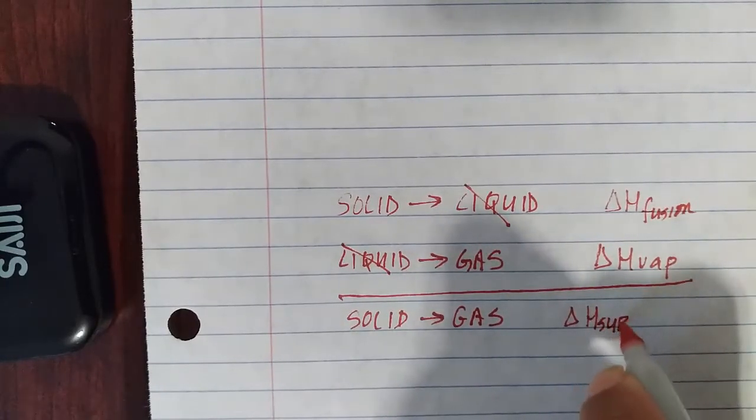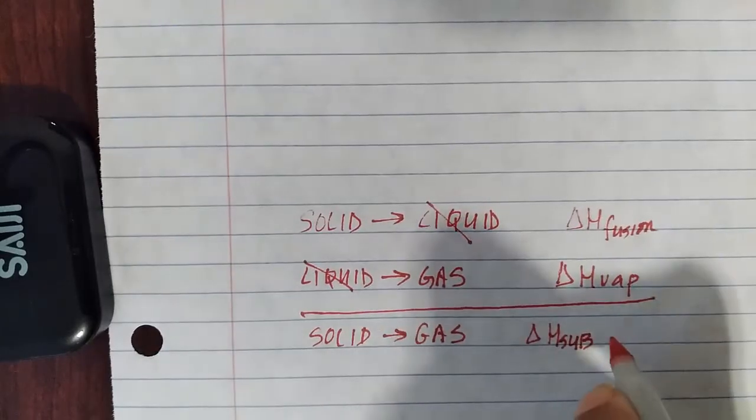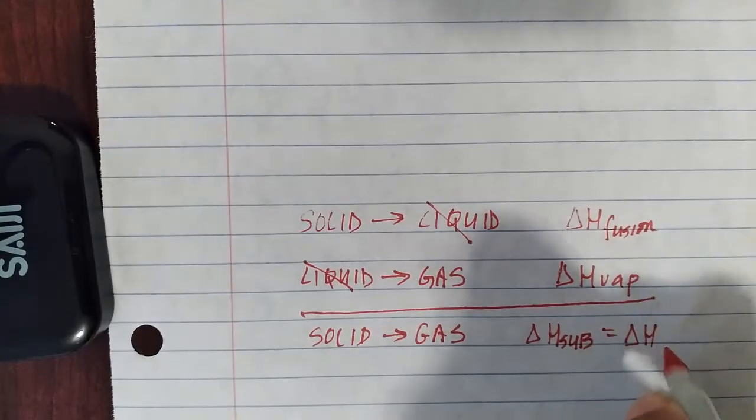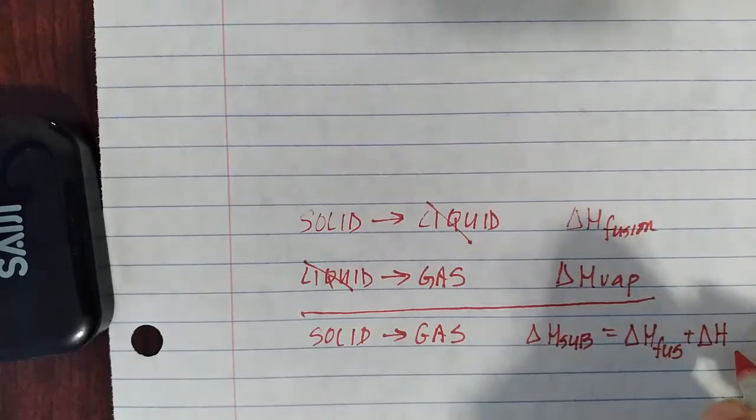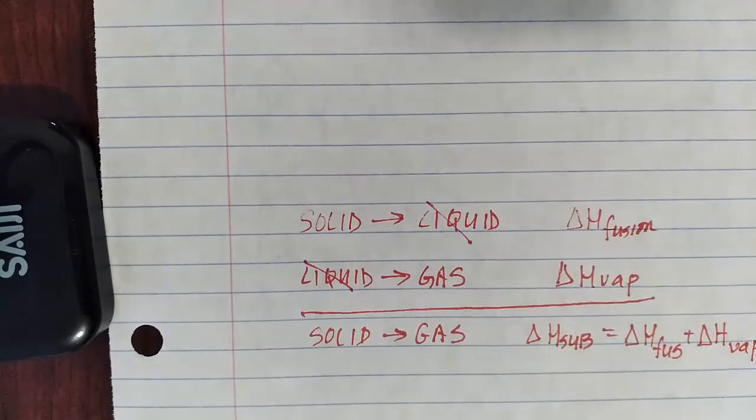And since we added these two equations together, we can add their corresponding delta H's. So the delta H of sublimation is nothing more than the delta H required to fuse, plus the delta H required to vaporize.